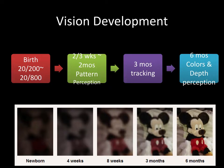In terms of colors, babies have the type of cells to perceive red and green at least at one month, and perhaps even earlier. This probably applies to the color blue as well.